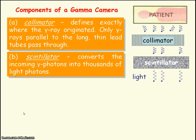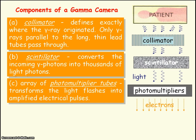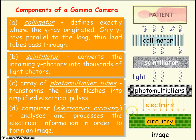The scintillator then converts each gamma photon into thousands of light photons, because the gamma photon has a much greater energy than a visible light photon. The light photons are then sent to a photomultiplier tube, which converts the light into amplified electrical pulses. These electrical pulses are sent to a computer where they are analyzed and processed in order to form the image.